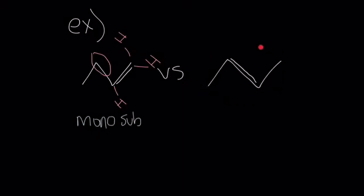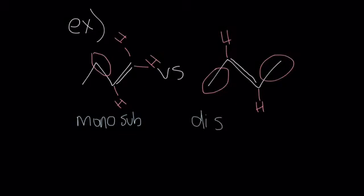Then looking at our structure on the right, if we draw in our hydrogens, we have one here and one here, and our other substituents are both here and here that are not hydrogens. So we can classify this as disubstituted. Now that we know a more substituted alkene is lower energy, we can say that the structure on the right would be favored.